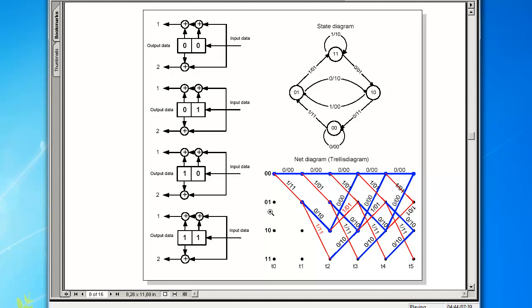The sequence in time is now an additional factor. The four possible states of the shift register are arranged vertically. Every additional bit at the input implies a further step to the right.